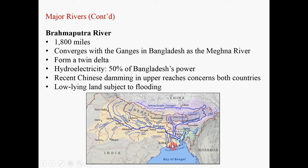This delta is sometimes called the twin delta — both the Ganges and the Brahmaputra River contribute a huge amount of silt and sediment to forming it. The Brahmaputra River is important not only for agriculture in Bangladesh but also for hydroelectricity — hydropower from the Brahmaputra contributes 50% of power in Bangladesh. In recent years, China began to build large dams on the upper reaches of the Brahmaputra River, which is a concern for both India and Bangladesh. The Ganges delta region is really low-lying land, making the region susceptible to flooding problems.